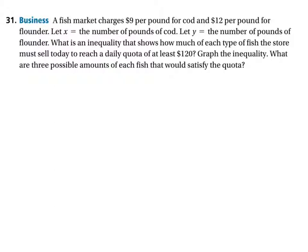A fish market charges $9 per pound for cod and $12 per pound for flounder. They're defining the variables here. Let X be the number of pounds of cod, let Y be the number of pounds of flounder.